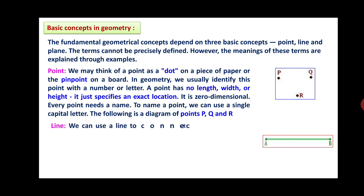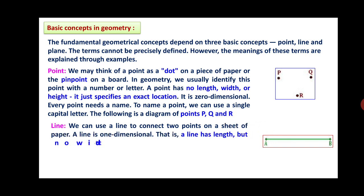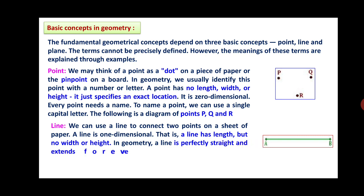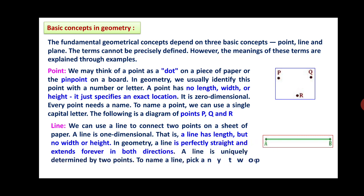Now, the second concept is a line. We can use a line to connect two points on a sheet of paper. A line is one-dimensional — that is, a line has length but no width or height. In geometry, a line is perfectly straight and extends forever in both directions. A line is uniquely determined by two points. To name a line, pick any two points on the line — for example, line AB, as you can see in the adjoining figure.